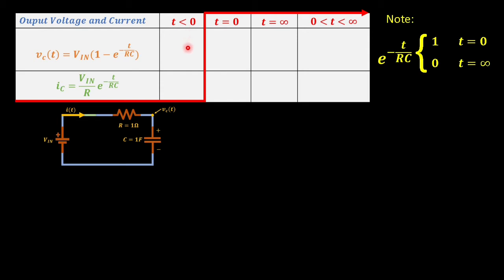Let's start at time less than zero. We don't have yet the step input, therefore both voltage and the current of the capacitor is equal to zero. The next time phase is time equal to zero. We have the step input, but the exponential term will be equal to one, so the term inside the bracket will be equal to zero, hence the capacitor voltage is zero. This is also supported by the fact that the capacitor does not allow abrupt change in voltage. This is one of the characteristics of the capacitor that you must remember.